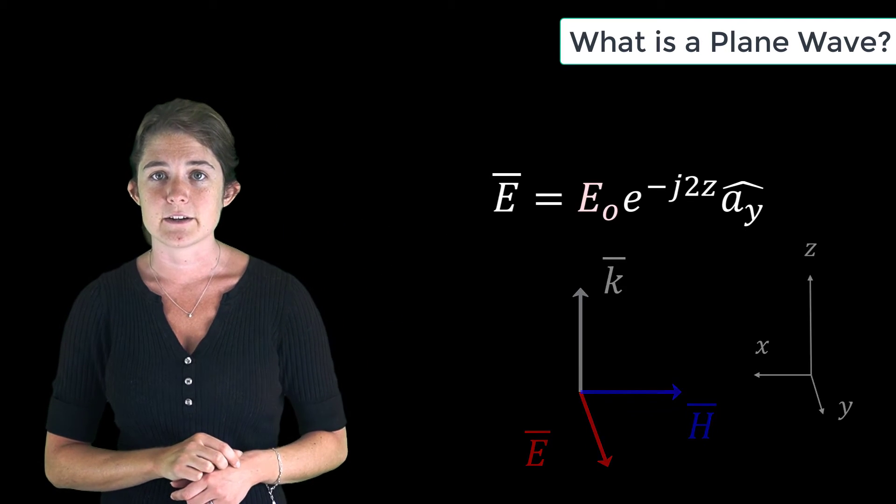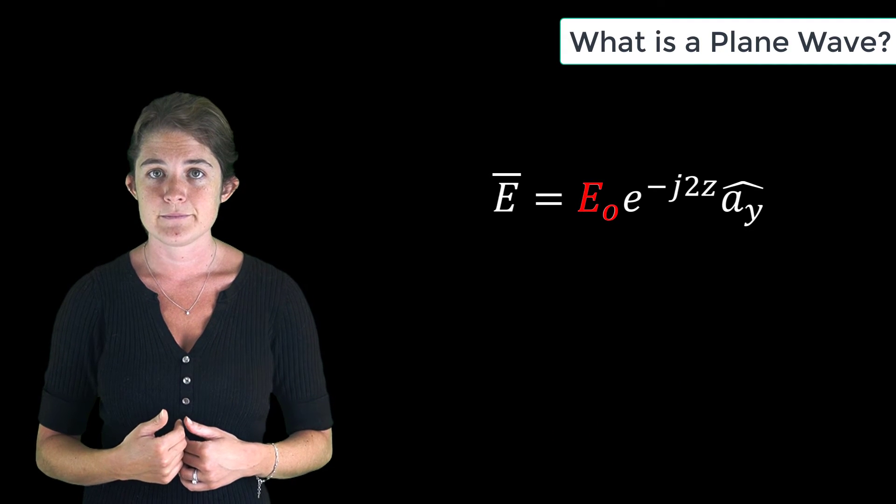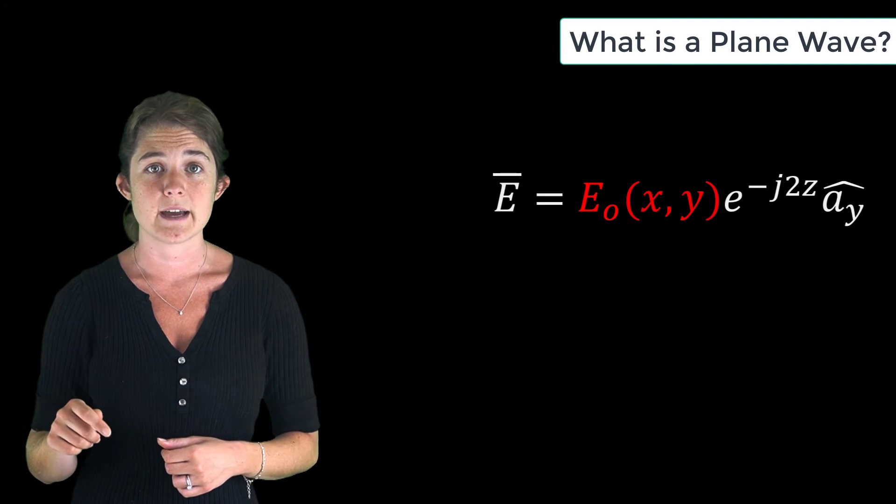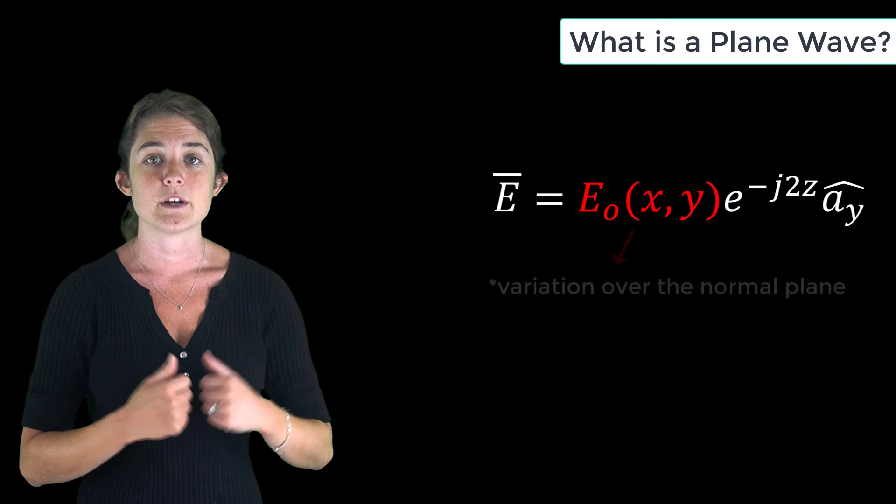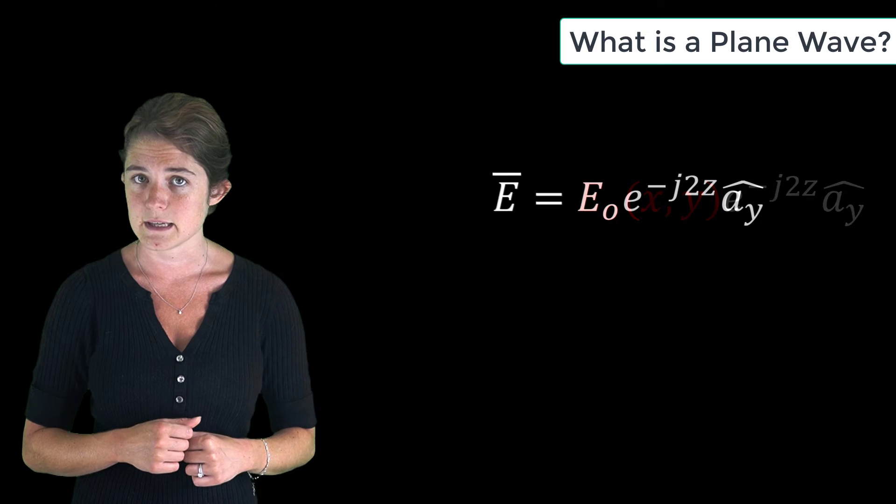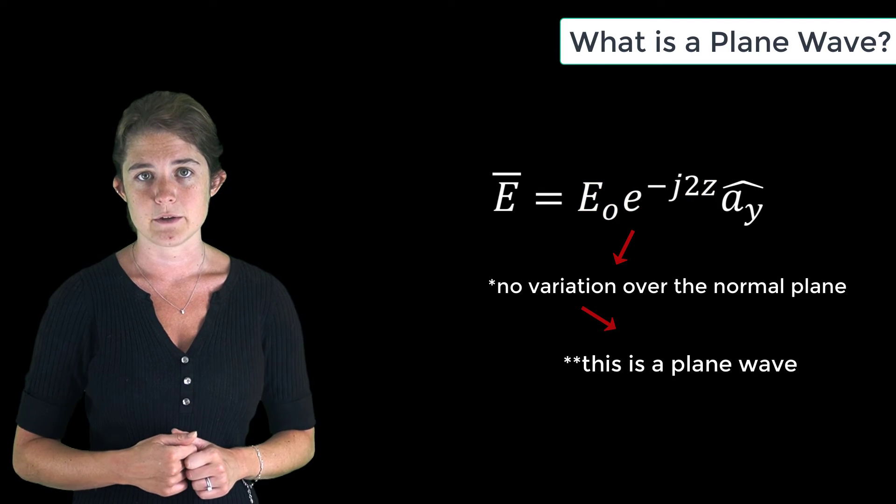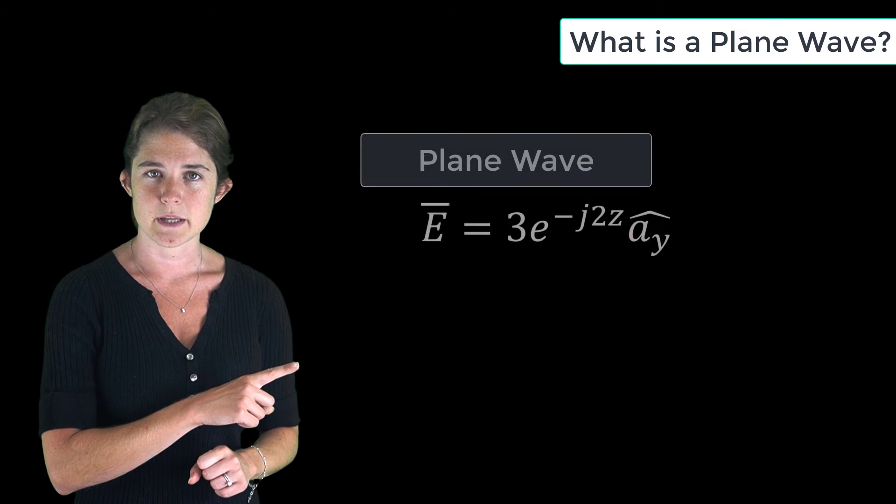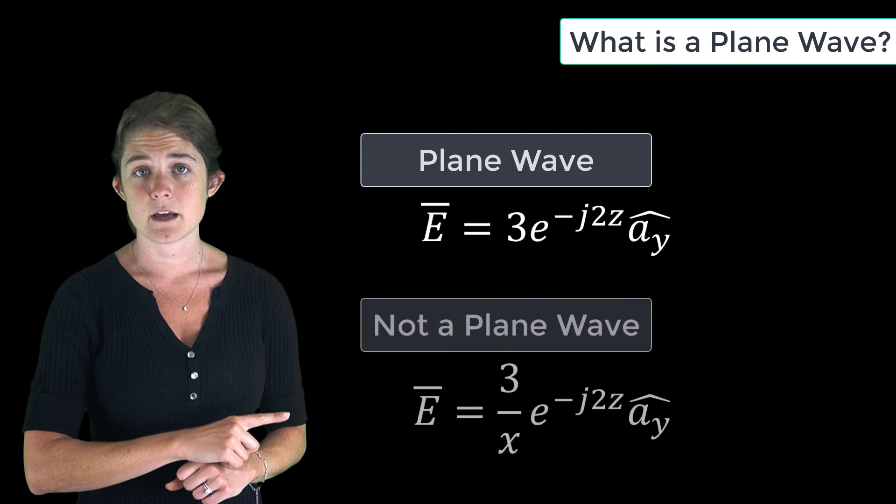The magnitude of the vector is given by E naught. If E naught were a function of x and or y, this would not be a plane wave. If E naught is a constant, or if it's a function of only z, then this is a plane wave. So this is a plane wave, but this is not a plane wave.